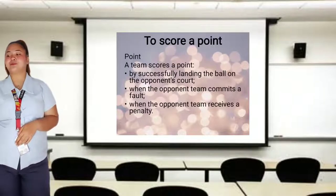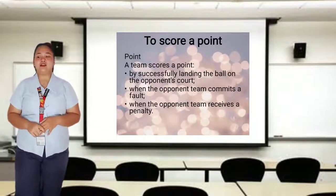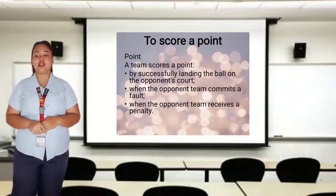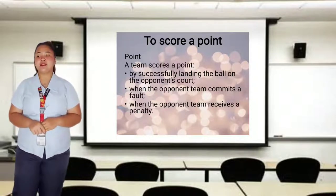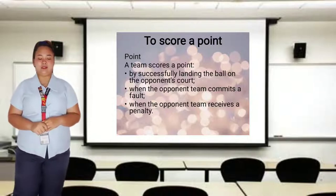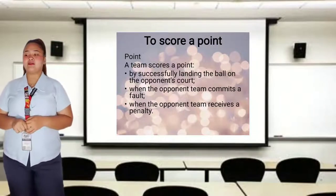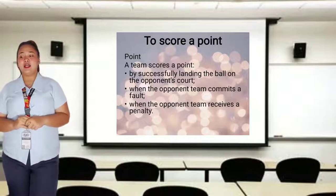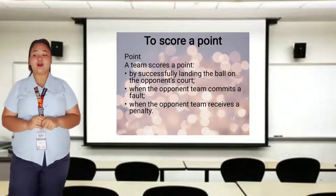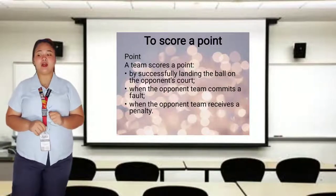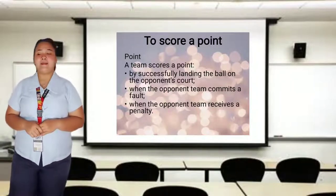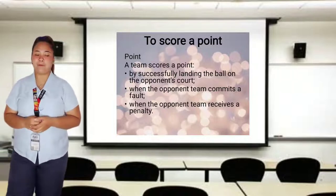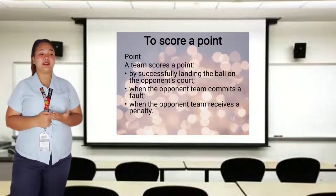Let's proceed to our discussion. To score a point: a team scores a point by successfully landing the ball on the opponent's court, when the opponent team commits a fault, or when the opponent team receives a penalty. Your team will successfully be given a score point if the ball lands on the opponent's court and the opponent commits a fault, and then the opponent team receives the penalty. That is how a team gets a score point.